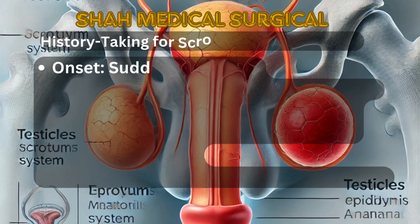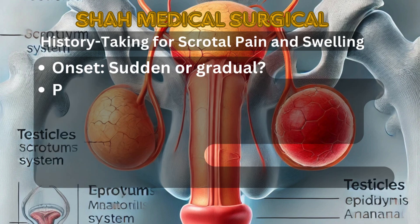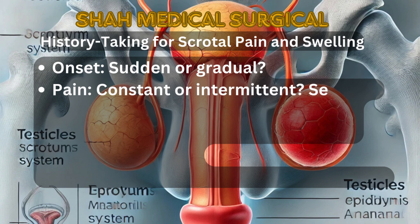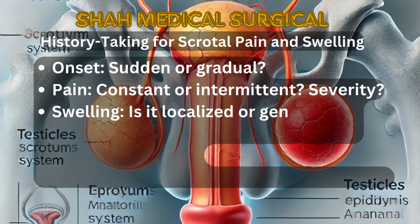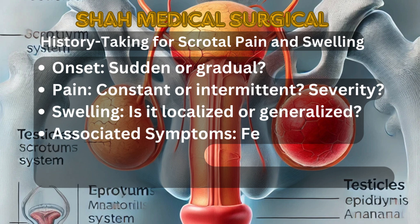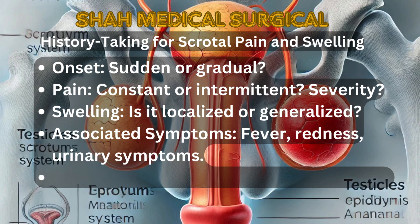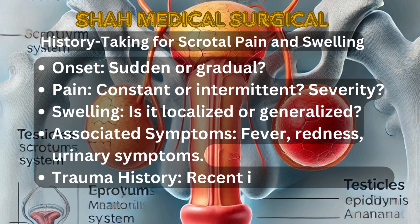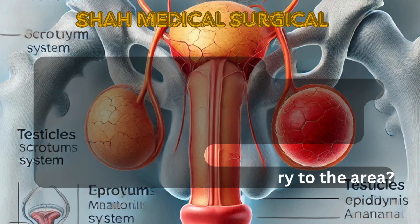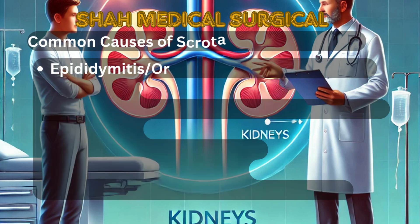History taking for scrotal pain and swelling. When assessing scrotal pain and swelling, ask about: 1. Onset — was the pain sudden or gradual? 2. Pain — is it constant or intermittent, and how severe is it? 3. Swelling — is the swelling localized or generalized? 4. Associated symptoms — is there fever, redness, or urinary symptoms? 5. Trauma history — has there been recent injury to the area?